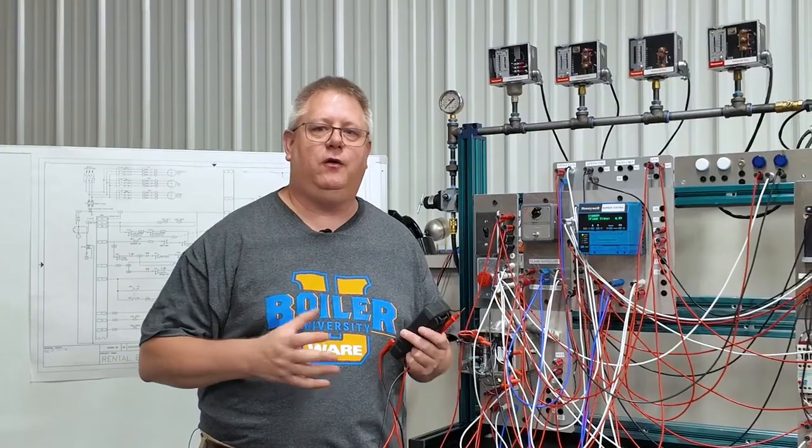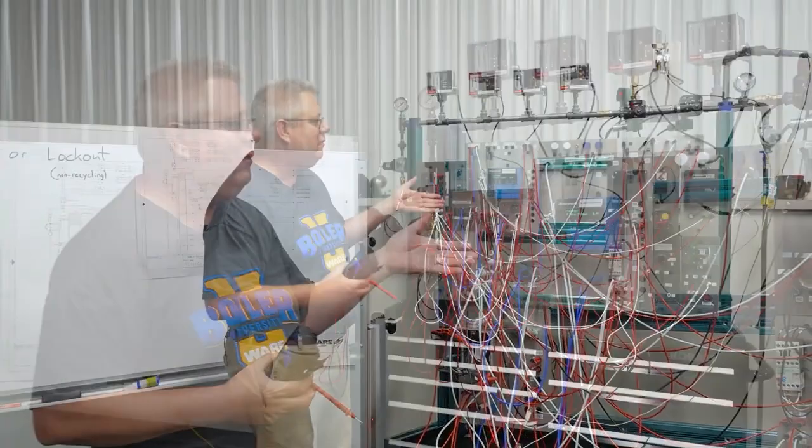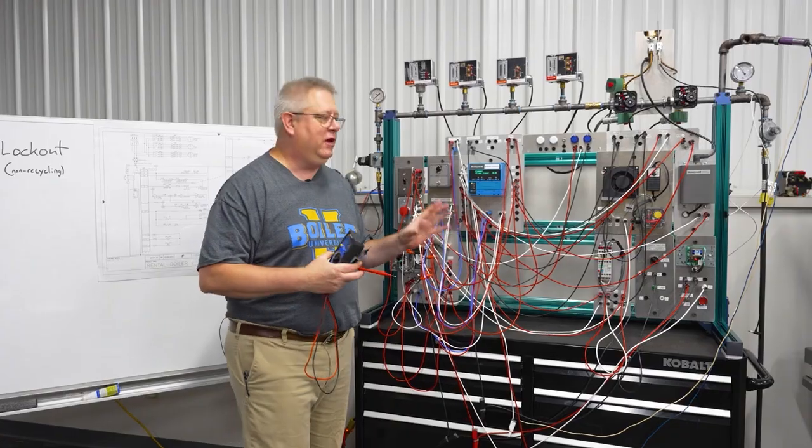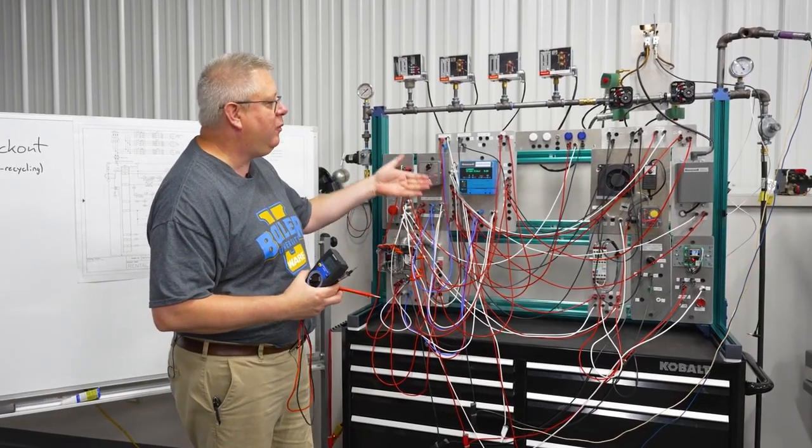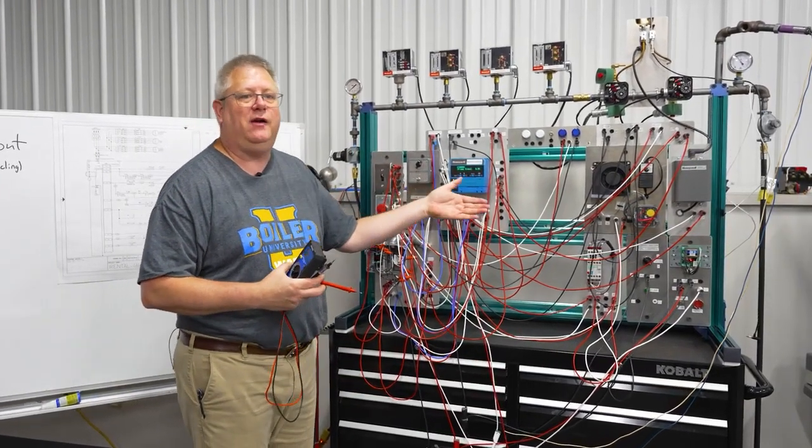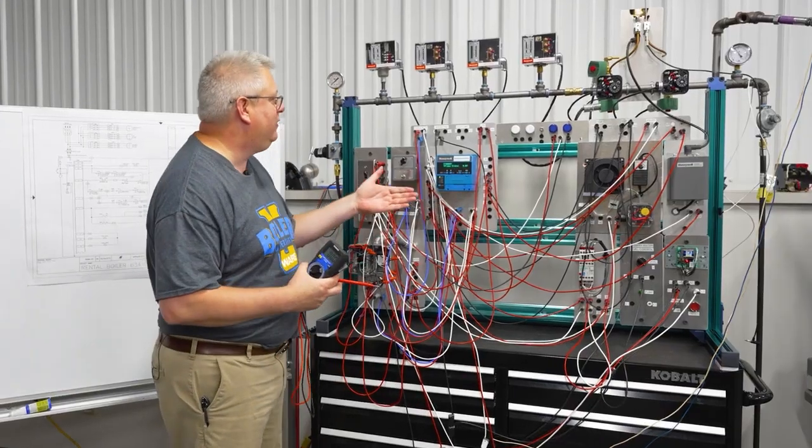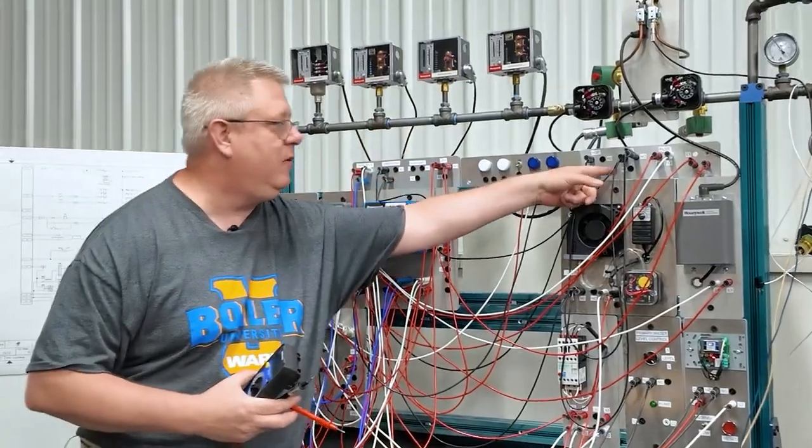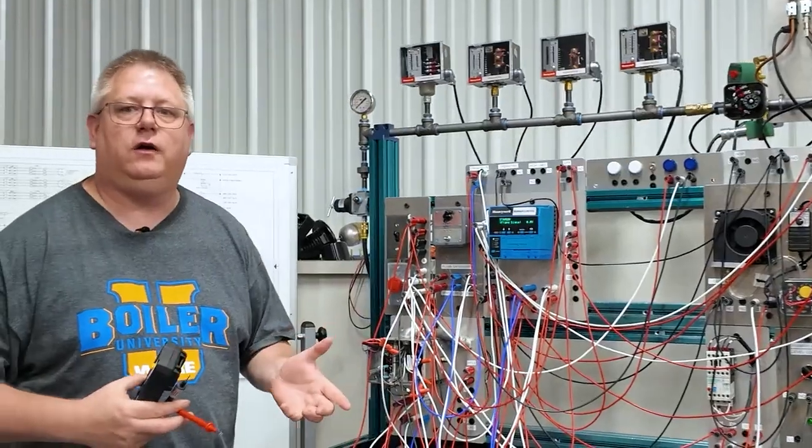Many a time when you've got a boiler down, we open up a panel and it may look like this or worse. And the issue with that on an actual boiler is most of this wiring is hidden in conduit, so it's not so easy to follow a wire from one switch to another.